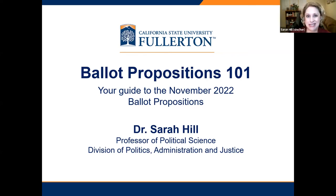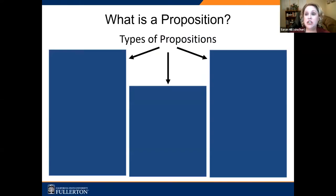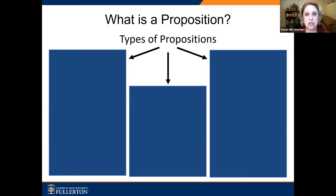There are only seven propositions on the ballot this time. That is actually, for California, not many at all — we haven't had so few since 1916. We're going to walk through them and I'll tell you a little bit about what the different sides are saying, the pros and cons. I like to start with: where does a proposition come from? We don't do a good job of educating folks on how propositions get onto the ballot, and that's actually really important and can inform your decision making. There are actually three different ways that a proposition can get on the ballot, and we have all three this time.